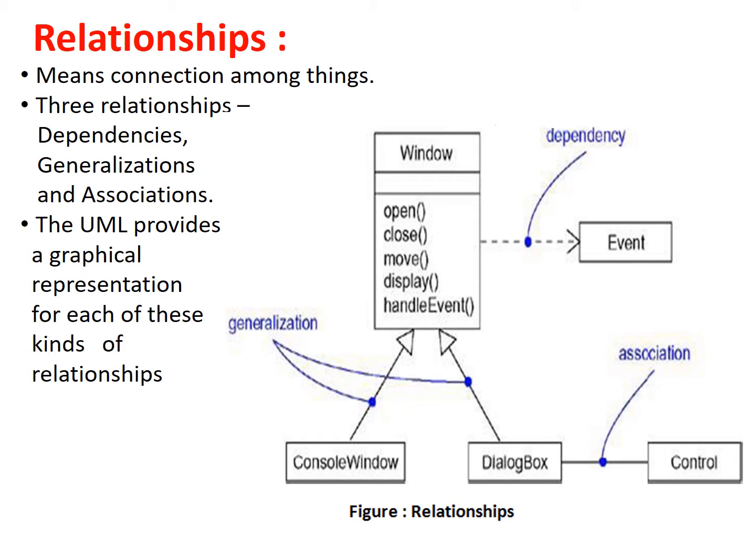In this figure, if you observe, there is a dependency type relationship between the class Window and Event. Similarly, the generalization relationship is available between Window and ConsoleWindow class, and also between Window and DialogBox class. And there is an association between DialogBox and the Control class.